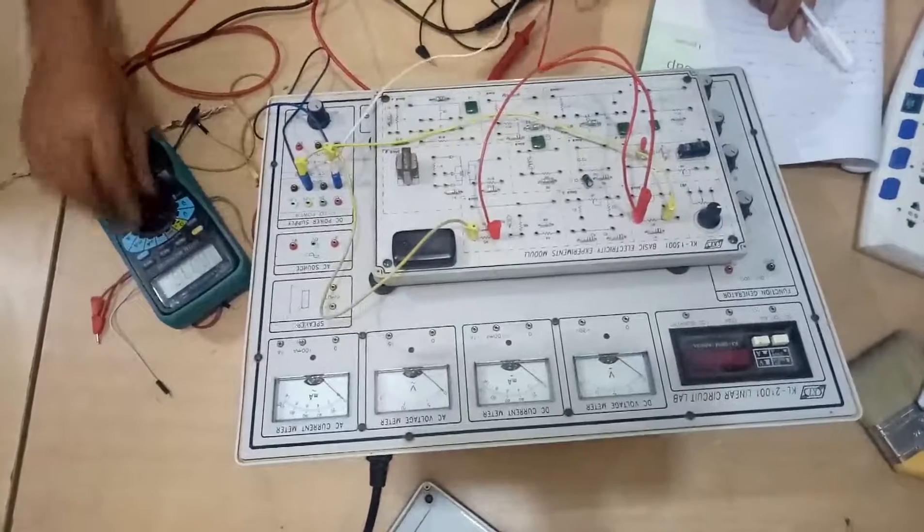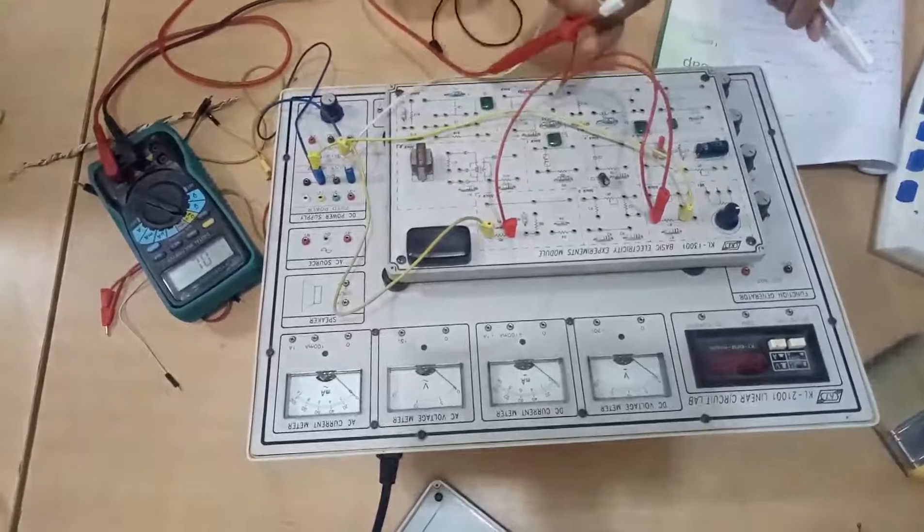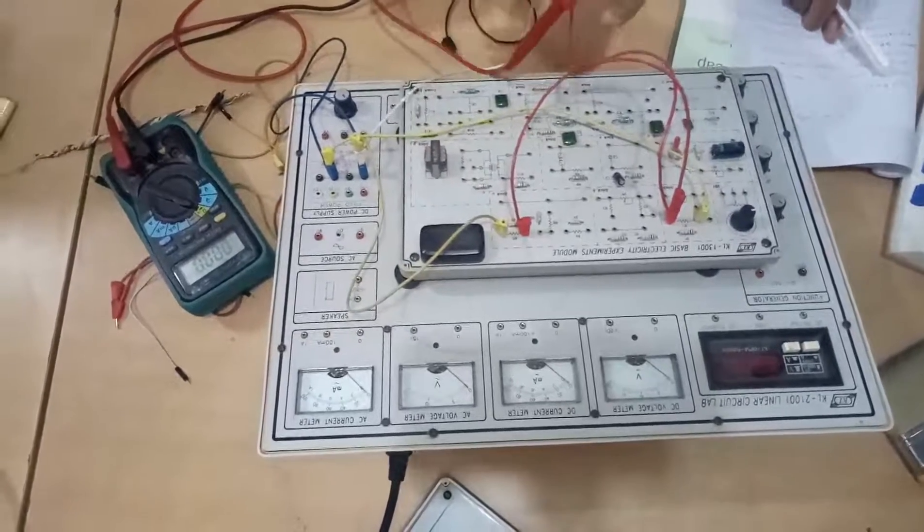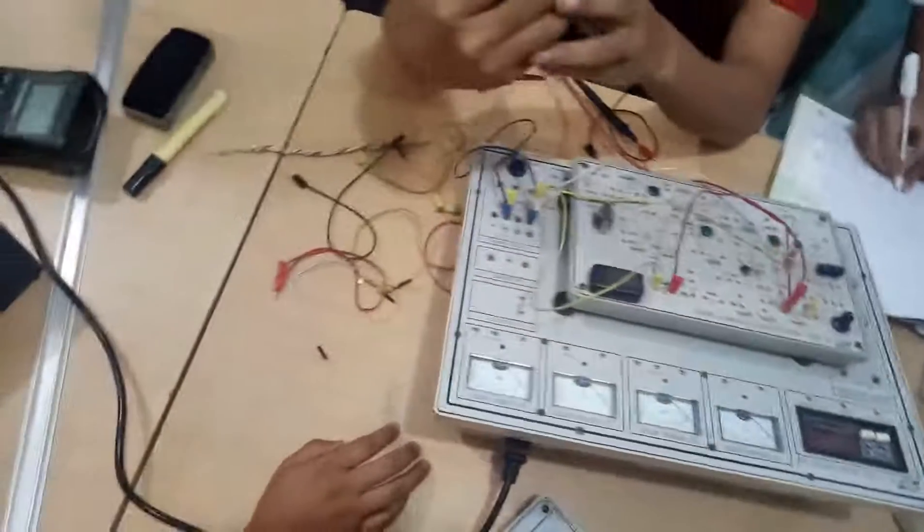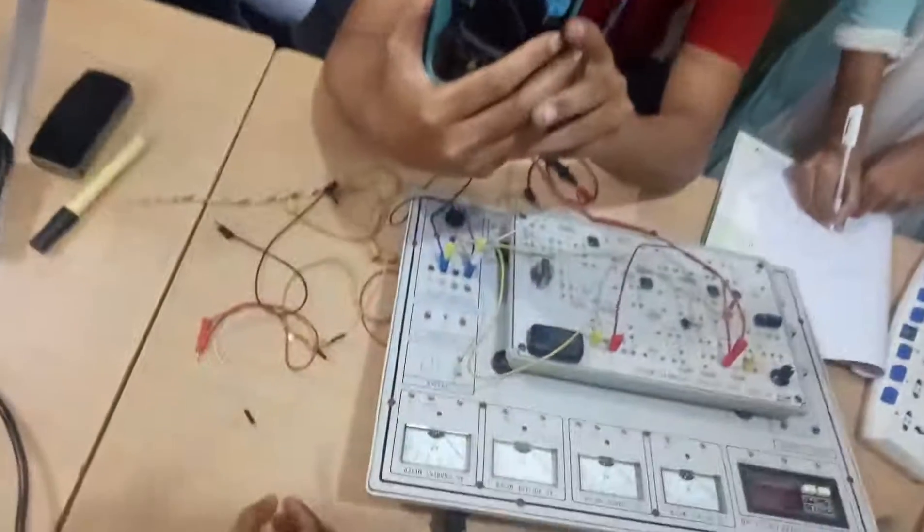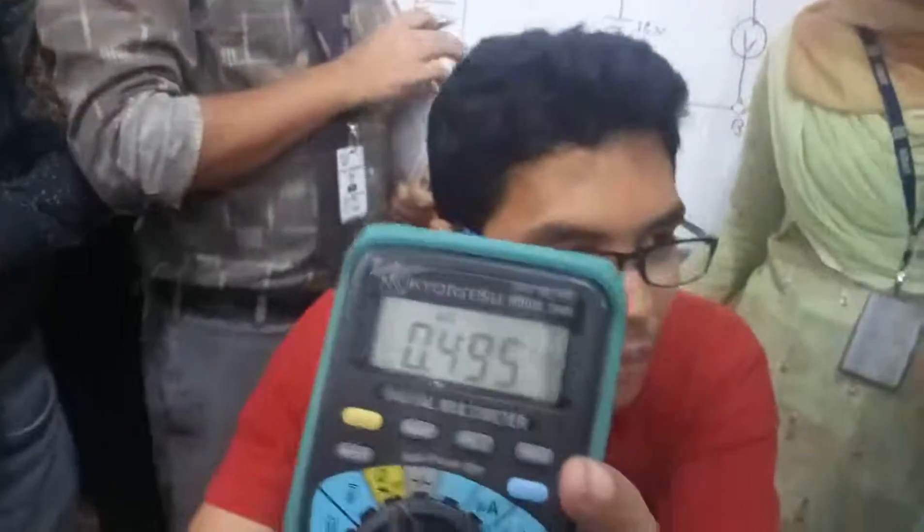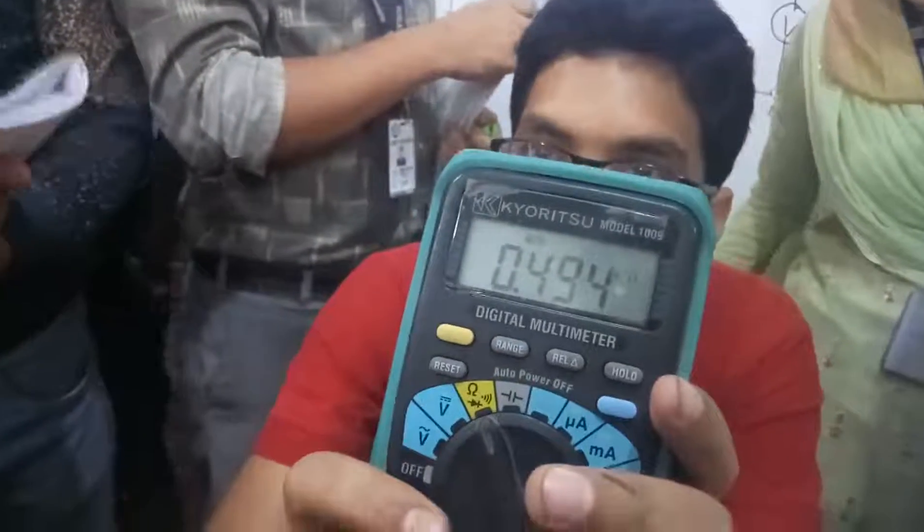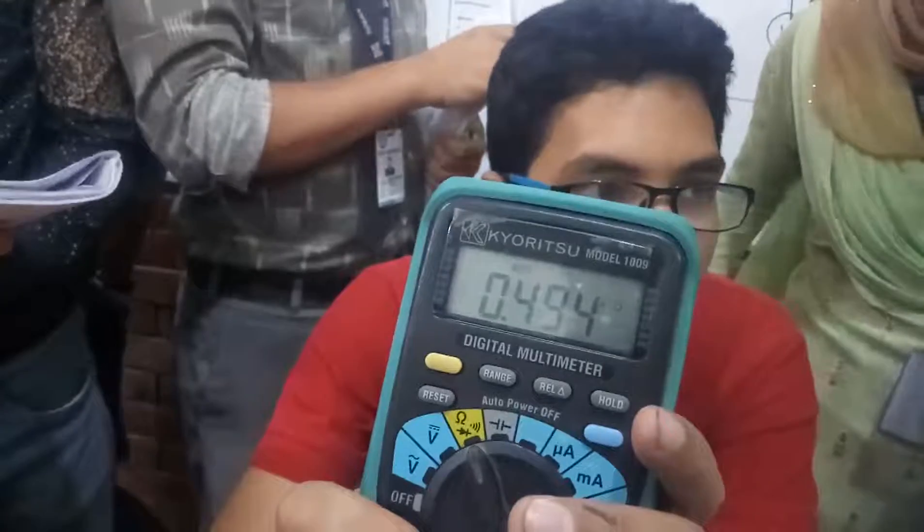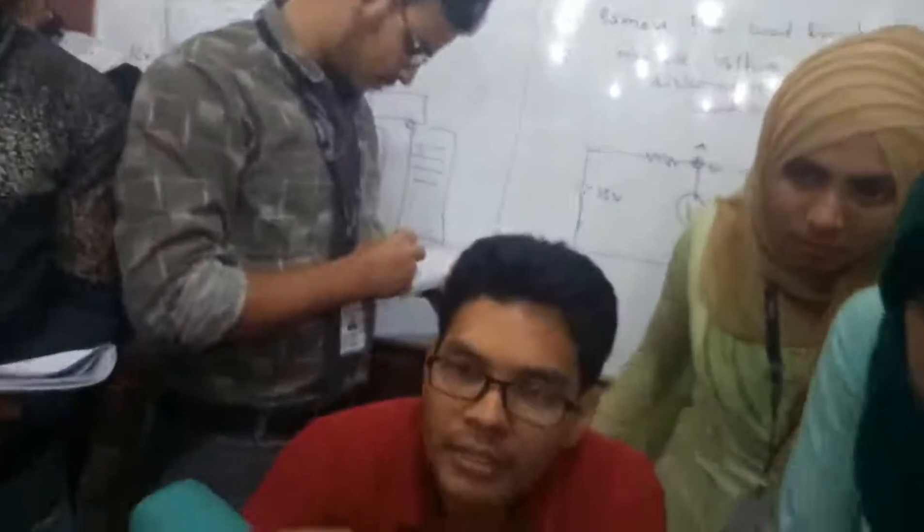So, make it an ohmmeter and then place between these two terminals. This will show you the Thevenin's equivalent. What is that? How much? No, no, no, no, no. Switch on power. Power will be off. Point four, four, nine, five kilo ohm, right? Point four, nine, four, nine, five kilo ohm. Do you see that? Point four, nine. Okay. Is that okay?